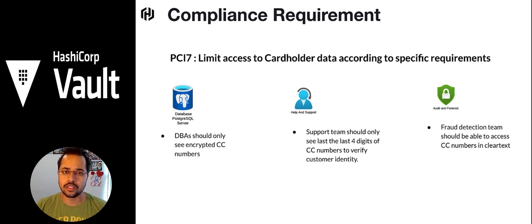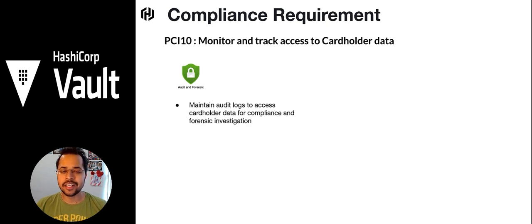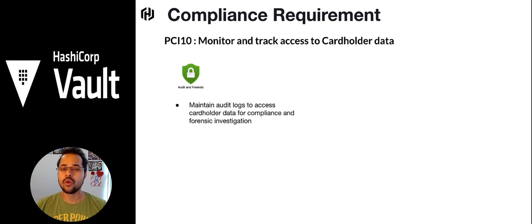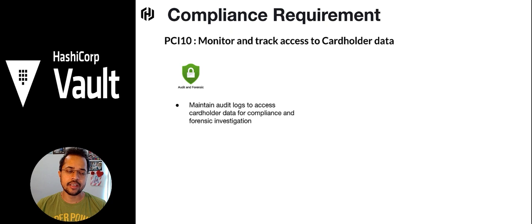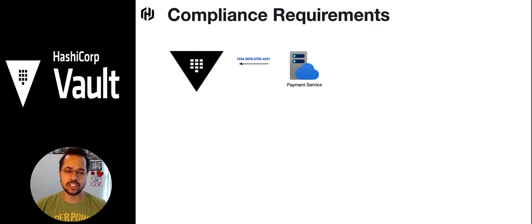For PCI 10, the audit and forensic team needs to monitor and track access to cardholder data. Anything happening in the payment industry — whether retrieving or writing card data to the database — has to be tracked. These are the three compliance requirements. Let me summarize because they're not easy to map.